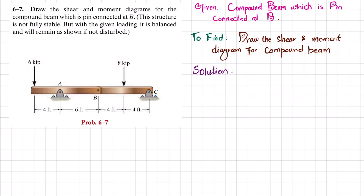Let's start with the solution. First, if you remove the pin support at point A, you will have a reaction force RA. If you remove the pin support at point C, you will have reaction force RC. Since this beam is pin supported, we will take two segments: AB and BC, and find the reaction forces.